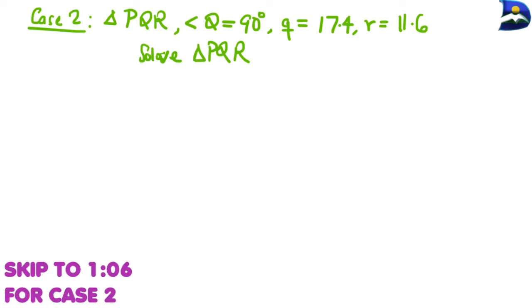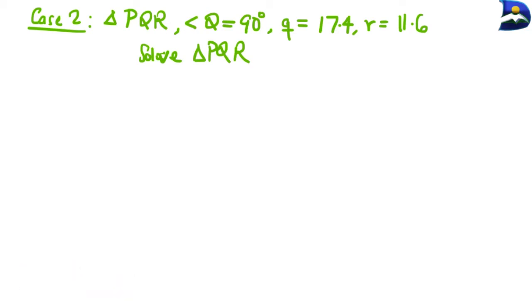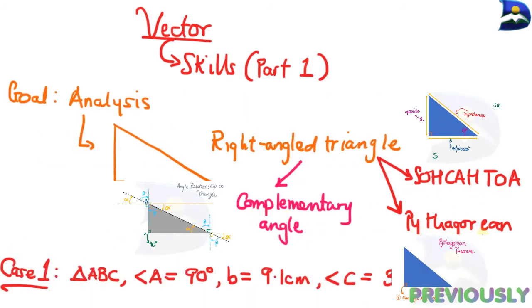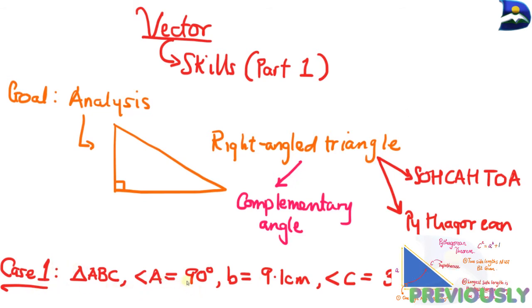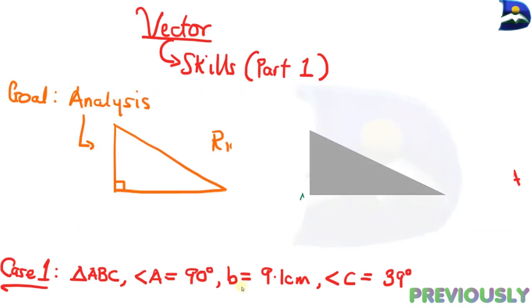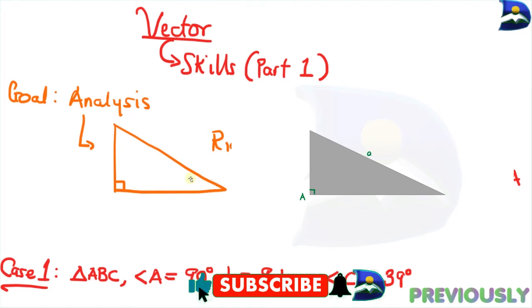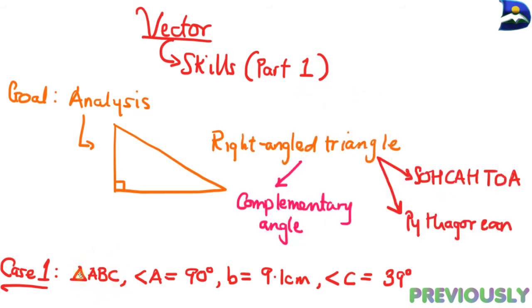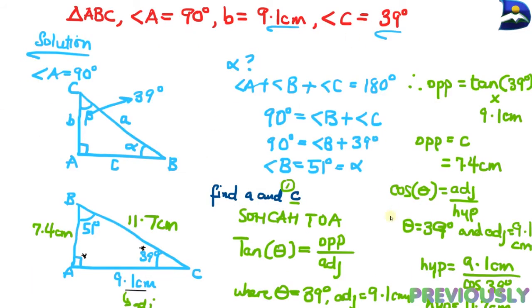From a previous video we explored what vectors are and the skills you need to be successful. These skills involve complementary angles, SOH-CAH-TOA concepts alongside the Pythagorean theorem. We looked at Case 1 where you're given two angles, and luckily the angle given confirmed it is indeed a right-angle triangle. We were given a side and an angle and were able to solve the triangle, determining missing sides and one missing angle.